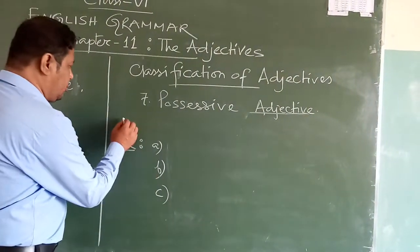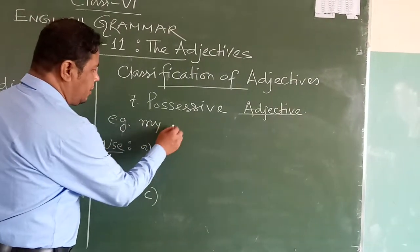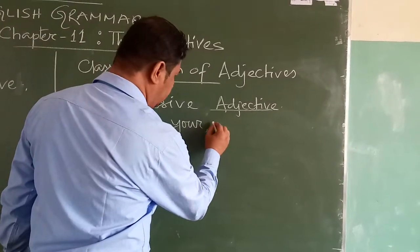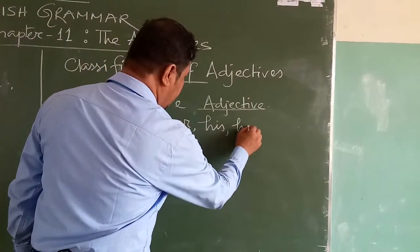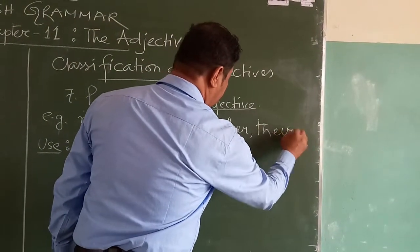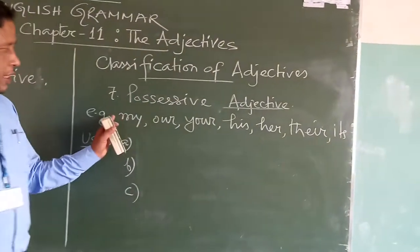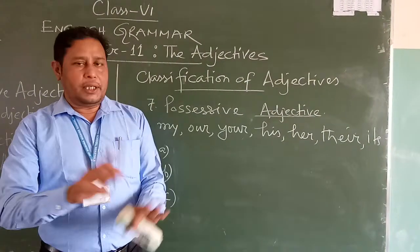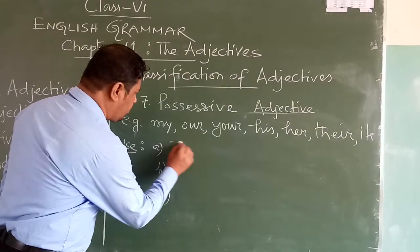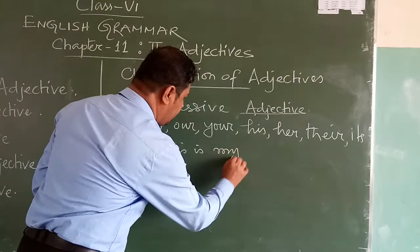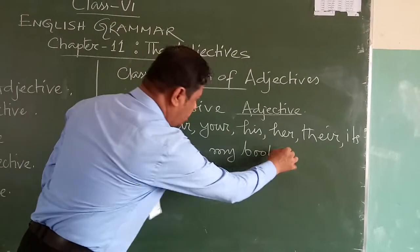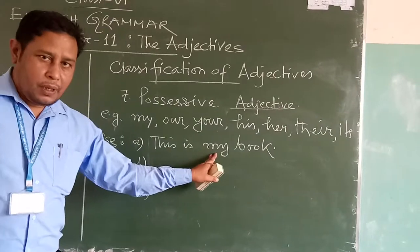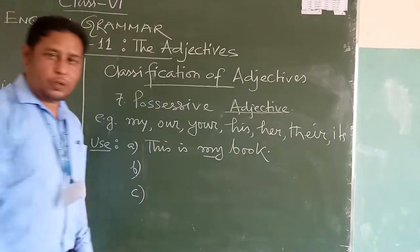We also have possessive pronouns, and I will explain the difference between the two. For example: 'This is my book.' Here this book belongs to you, so it is your property — that is why 'my' is a possessive adjective. It is followed by one noun, which is 'book.' That is why it is a possessive adjective.